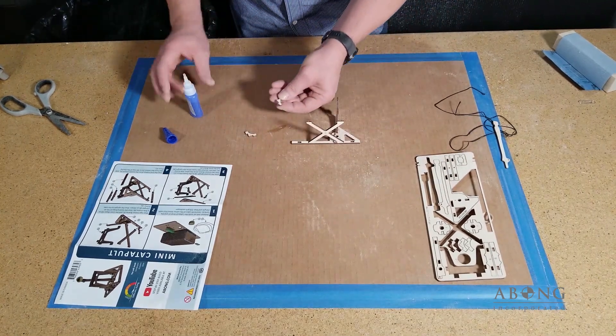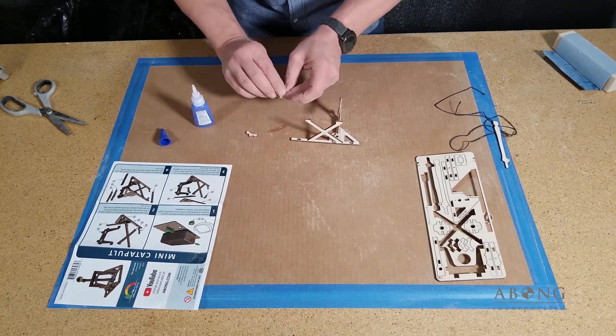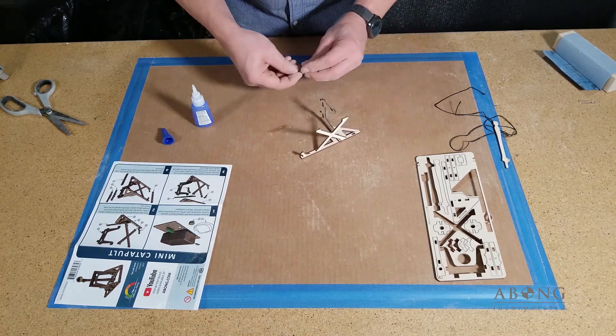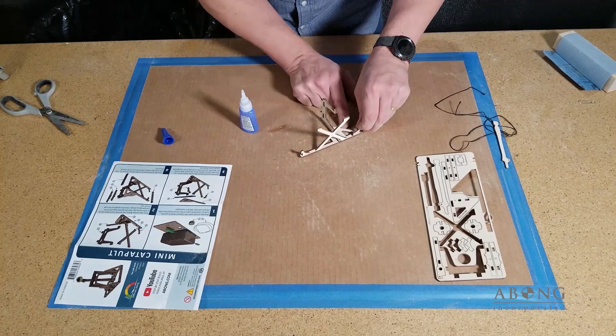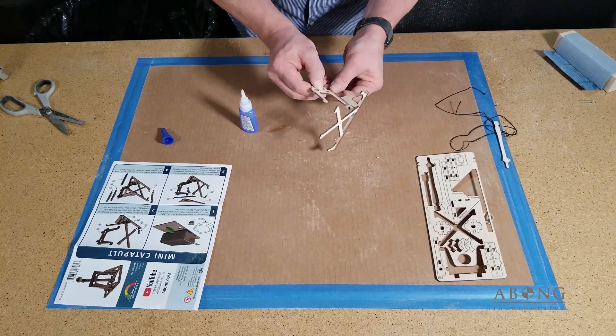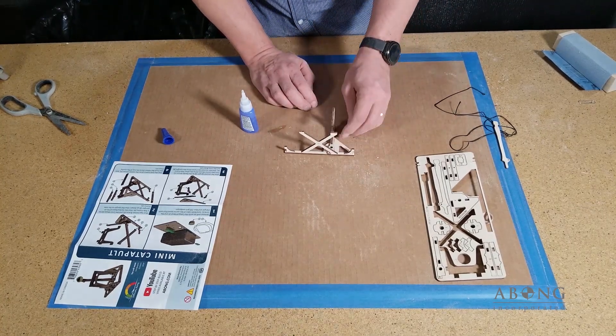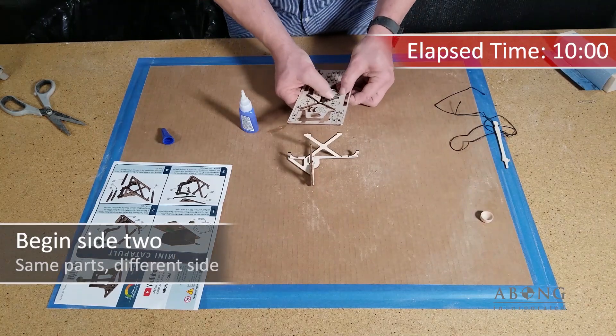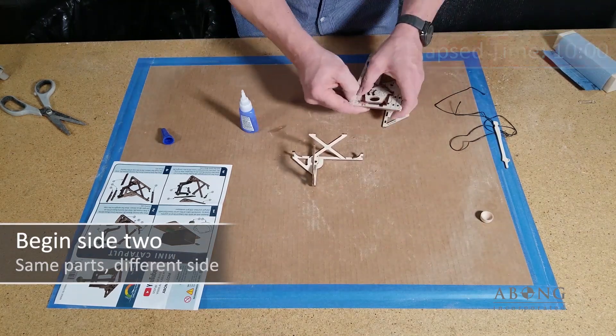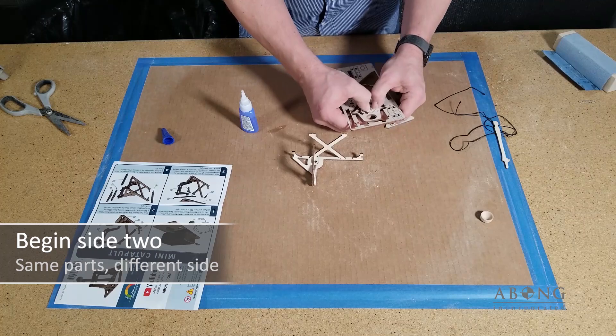And now these two corner braces, again I'm going to make sure that the marking goes to the bottom so that when the kit's assembled you can't see those marks and just press those into place. That's it. So we got the first step done. We're 10 minutes in and now we're just going to do the same for the other side of the catapult.